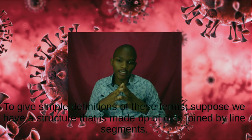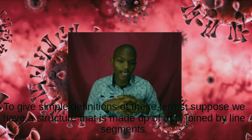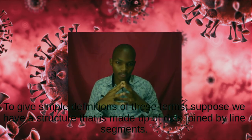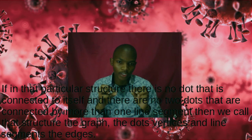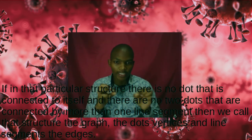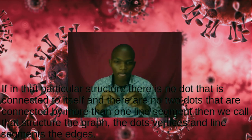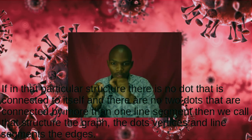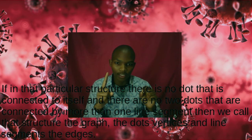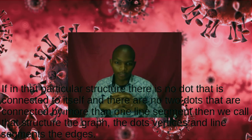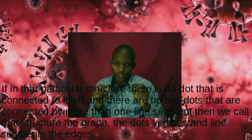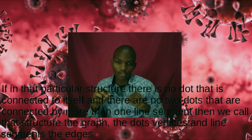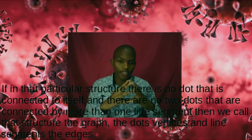To understand these terms, suppose we have a structure that is made up of dots that are joined together with line segments. If there is no dot in that structure connected with a line segment to itself, and there are no two dots joined by more than one line segment, we call that particular structure a graph. The set of dots we call the vertices, and the set of line segments joining the dots we call the edges.